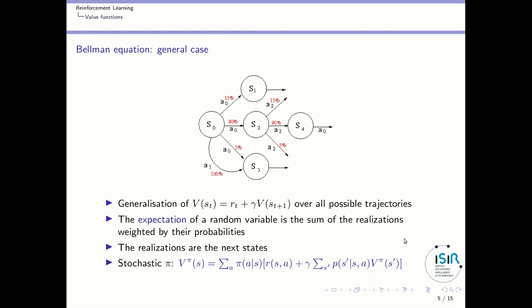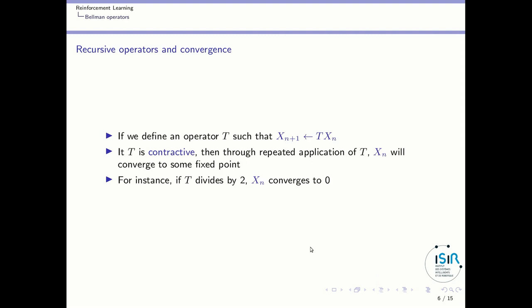Look closely at this formula: the value of a state will be the immediate reward plus gamma times the sum over the different probabilities of transitions times the value. You will see this again many times because this will allow us to define what we call Bellman operators.